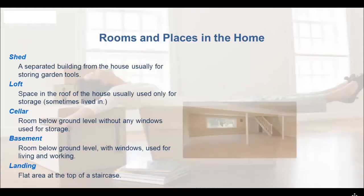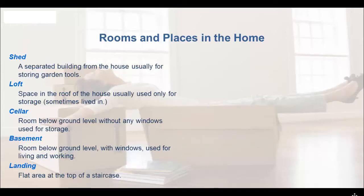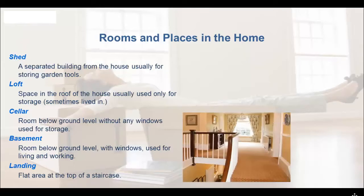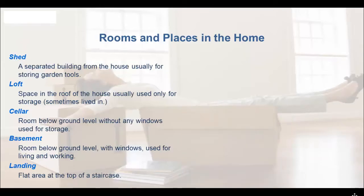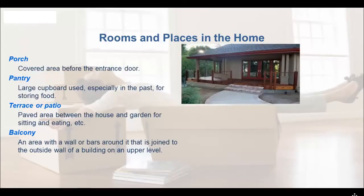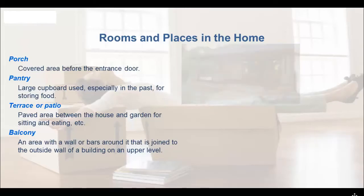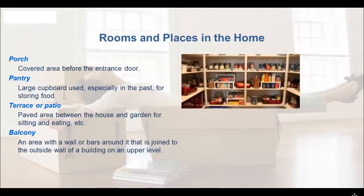A basement is similar to a cellar — again it's below ground, but with windows, and used for living or even working. A landing is a flat area at the top of a staircase. A porch is a covered area before the entrance door. A pantry is a large cupboard used, especially in the past, for storing food — not so common in modern apartments.